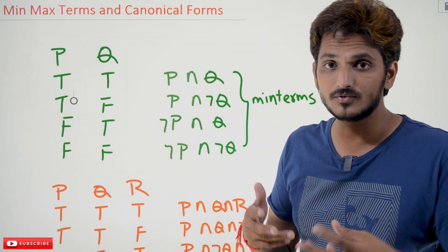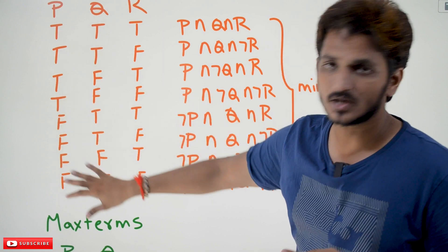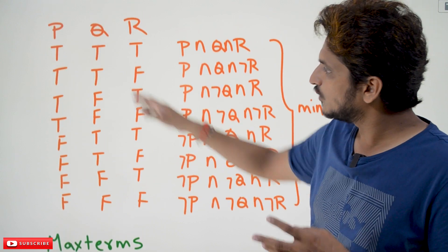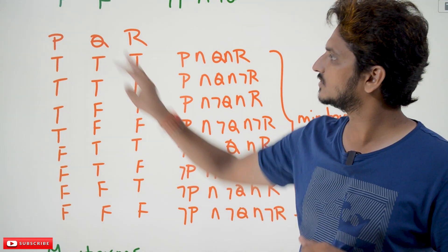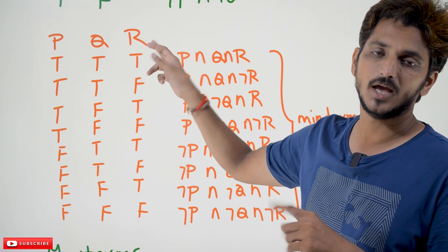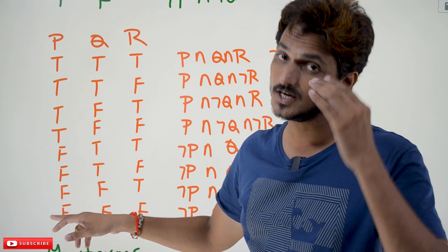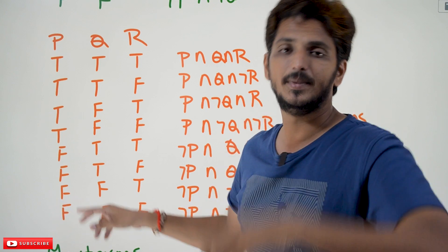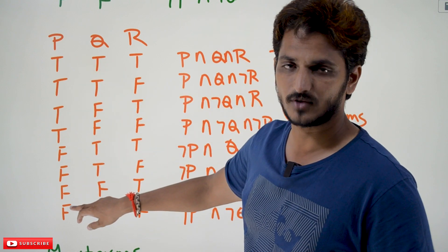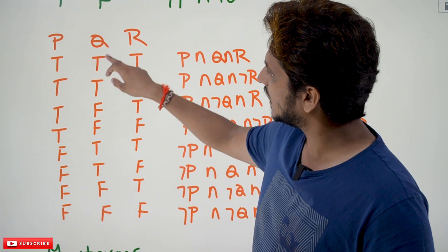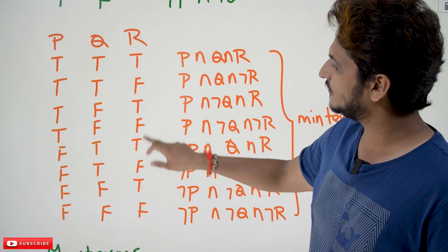Similarly, if you want to write the Min Terms for three variables, let us take P, Q, R. What are all the possible truth values that we are going to write? Eight possibilities are there. The shortcut we already discussed in our beginning classes: the first line you write true true true true false false false false, the second line true true false false true true false false, and the third line T F T F T F T F.